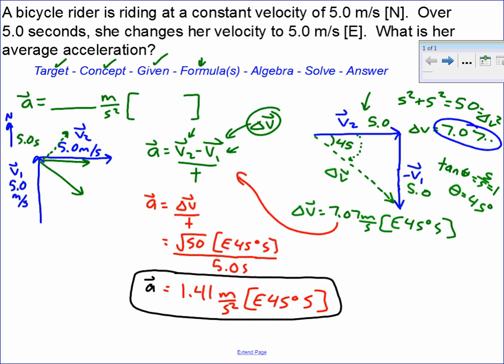That can come back up to the top now. I gave you two significant digits, so it's going to be 1.4 meters per second squared, east 45 degrees south. That's your final answer.